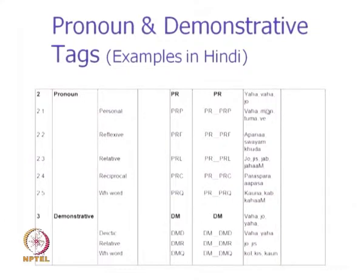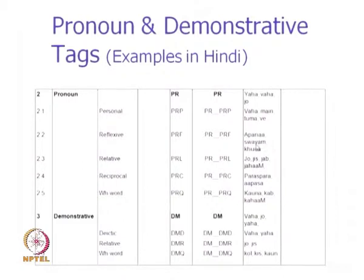Personal pronouns include: main (first person singular), o (third person singular), tum (second person singular), we (third person plural) — these all refer to persons and are tagged PR_PRP. Reflexive pronouns refer to self: apna, swayam, khud — for example, 'apna ghar' (my own house), 'swayam ko samjho' (understand yourself), 'khud hi jake dekho' (go yourself and see) — tagged PR_PRF. Relative pronouns link clauses: jo, jis, jab, jahan — for example, 'o larka jo kal aya tha achcha tairta hai' (the boy who came yesterday swims well) — tagged PR_PRL.